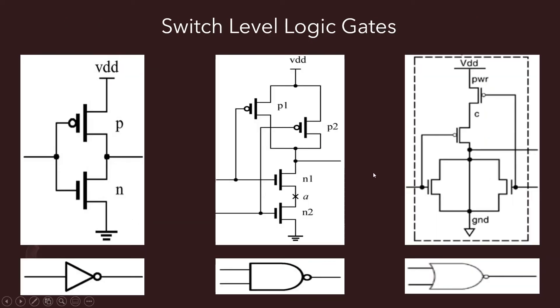And here's some switch level logic gates. This is a representation in CMOS using one PMOS and one NMOS. Here's a NOT gate. We have two PMOS in parallel, two NMOS in series, making a NAND gate. We have two NMOS in parallel this time and two PMOS in series, making a NOR gate. And that's what I'm going to go over in the Verilog code.